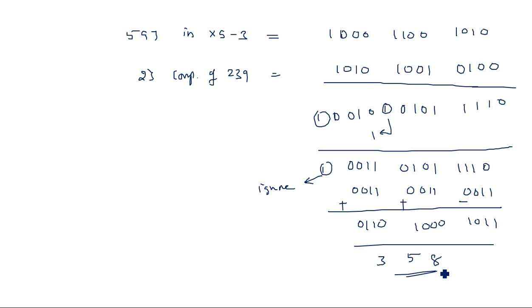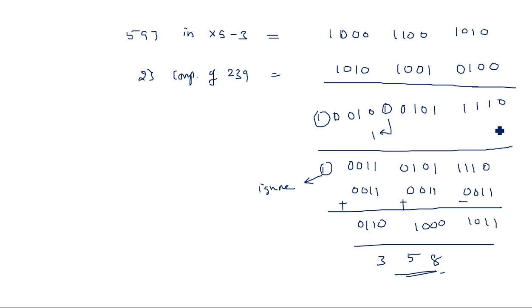If you have any doubt, you can do it normally and compare the result. In normal subtraction we know the same results confirm correctness. In this way, you can perform 9s and 10s complement methods for XS3 subtractions. Thank you.